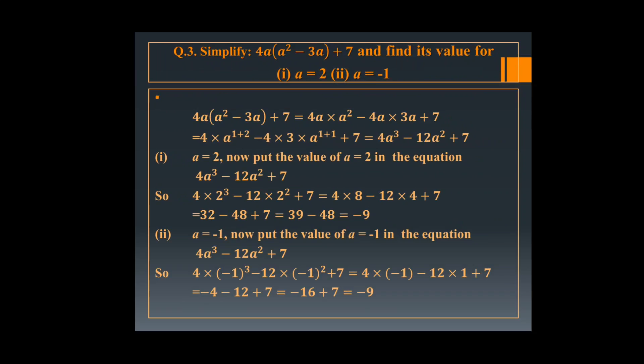Now in question number 3, simplify 4A multiplied by A square minus 3A plus 7, and then find the value for A equal to 2 and A equal to minus 1. So first we multiply 4A by A square, then 4A by 3A, then 4A by 7. Power of A in the first term is 1 plus 2, in the second it is 1 plus 1. So it is 4A cube minus 12A square plus 7.